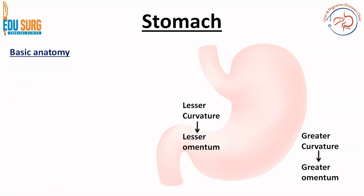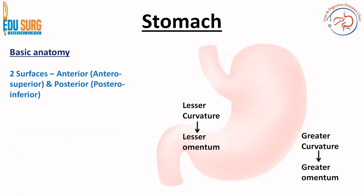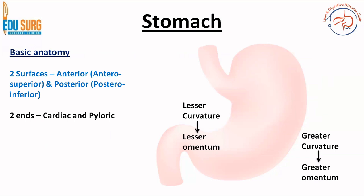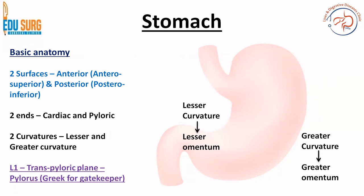The stomach has two surfaces: the anterior, or the anterior superior surface if you are looking in actual anatomical terms, and posterior or the posterior inferior surface. The two ends: there is the cardiac end of the stomach which is the upper or the cranial end, and the pyloric end which is the lower end towards the duodenum. Two curvatures as we have already seen, and L1 is the transpyloric plane.